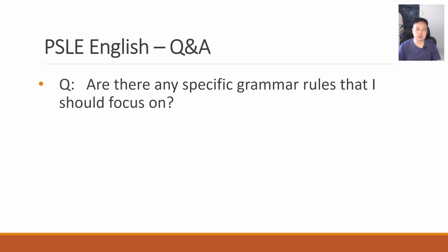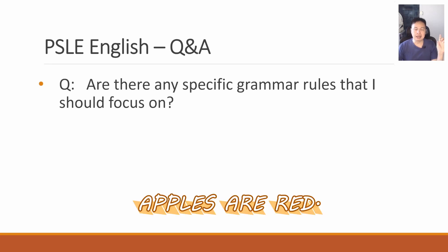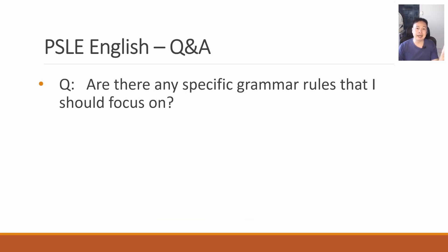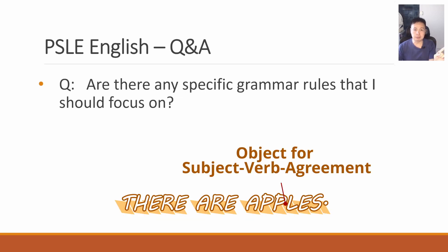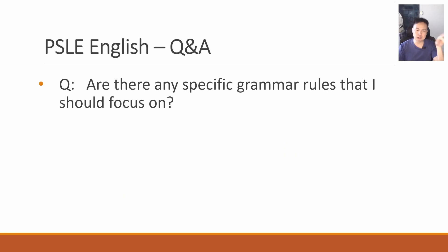Are there specific grammar rules I should focus on? You should focus on all of them, in particular the more important ones like subject-verb agreement. Here's one quick tip: sometimes students only look for the subject at the beginning of the sentence, but the subject can be at the back of the sentence after the verb. For example, 'Apples are red' — the subject is at the beginning. But if the sentence goes 'There are apples,' then the subject is at the back. A lot of students forget to continue reading the rest of the sentence.